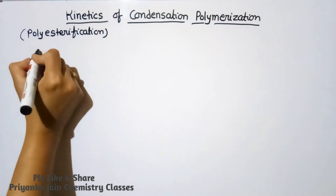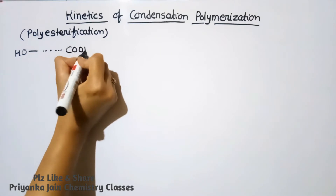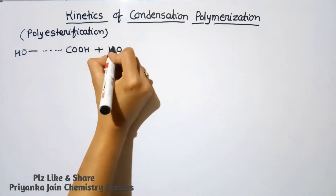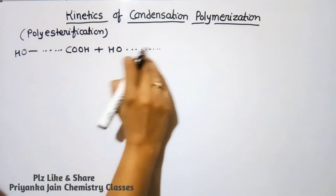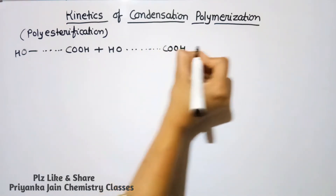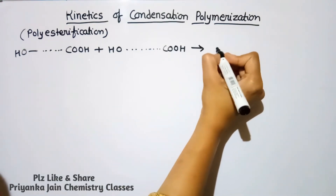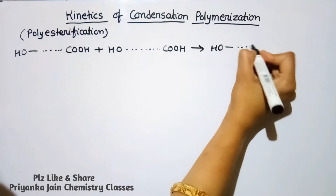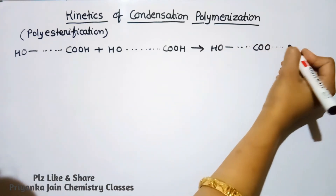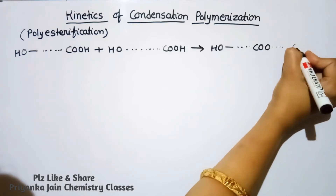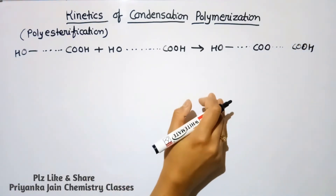In polyesterification, the COOH group of one hydroxy acid unit reacts with the OH group of another, releasing H₂O and forming an ester linkage, growing the chain. An important law for condensation polymerization is Flory's law: the reactivity of a functional group is independent of the length of the chain to which it is attached — the chain length does not affect the reactivity of functional groups.